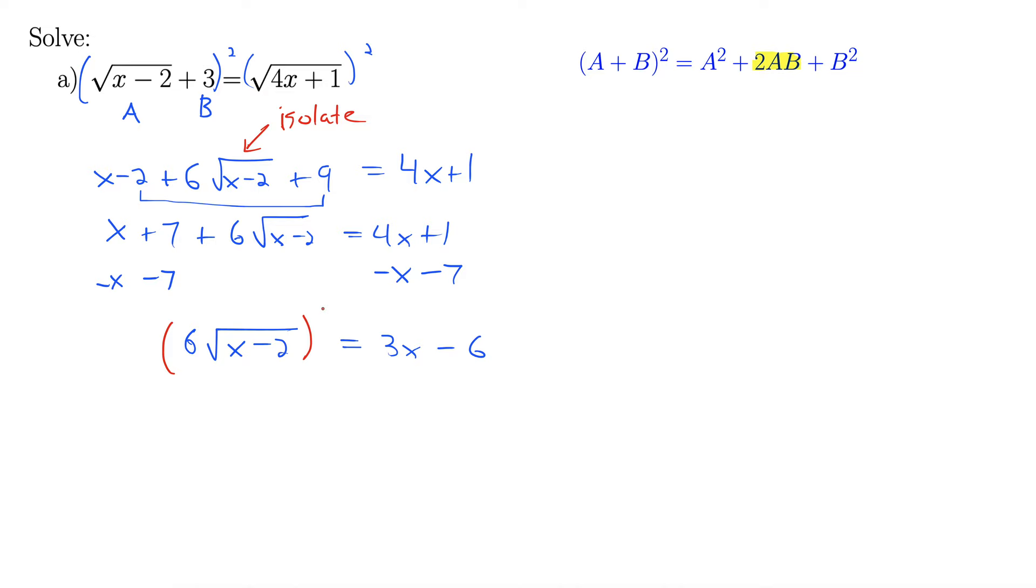What does that give us? Well, 6 squared is 36, and then square root squared just gives us x minus 2. On the right side, we're again going to use this binomial squared equation. This is 9x squared minus 3x times 6 times 2 is 36x plus 6 squared, 36.